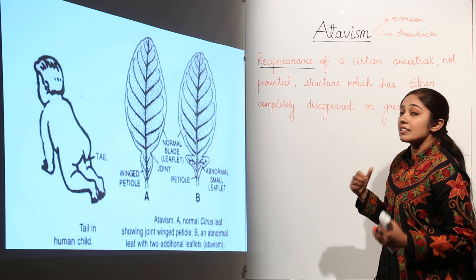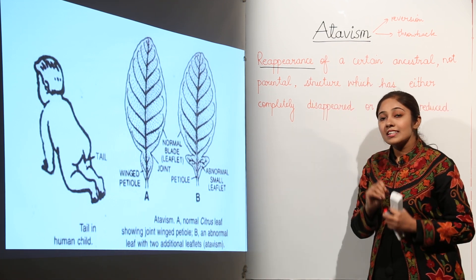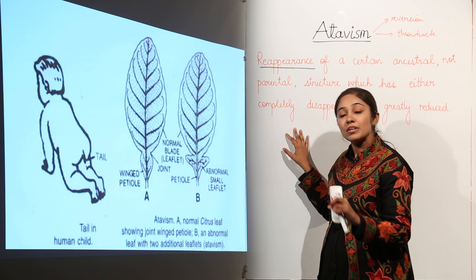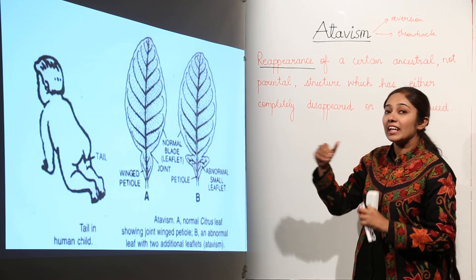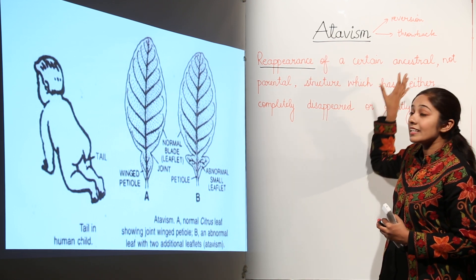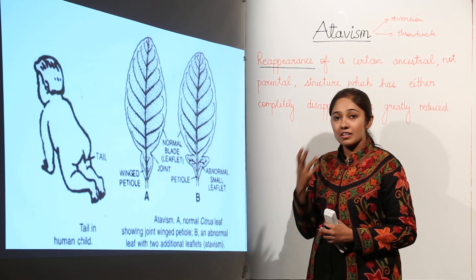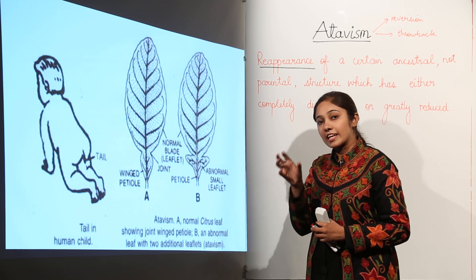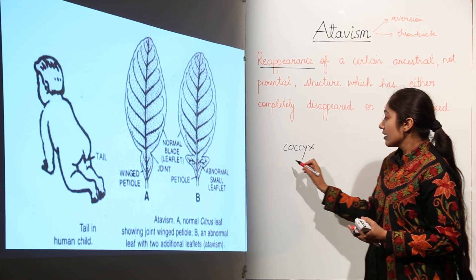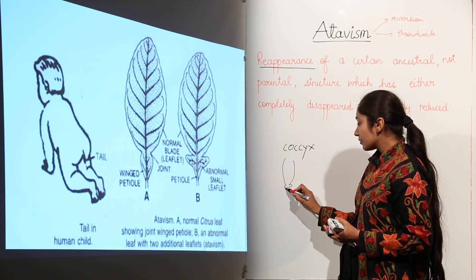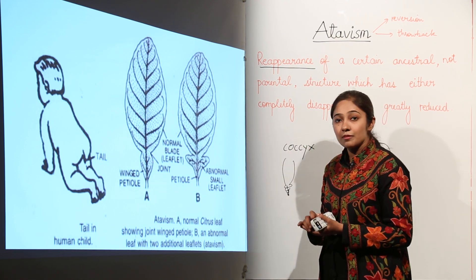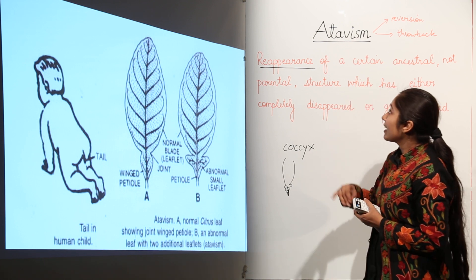Let us take an example. Some babies are born with a tailbone. This tailbone was considered an ancestral character but is not present in most individuals now. So the presence of a tailbone in some individuals is an example of atavism. As you can see in the image, sometimes babies are born with a tail or tailbone, also known as coccyx, which is formed at the end of the vertebral column where a few segments are fused together.